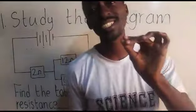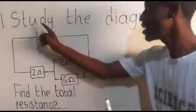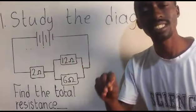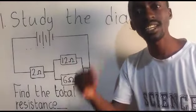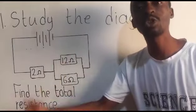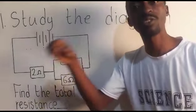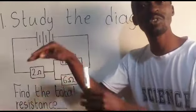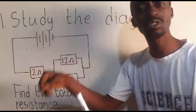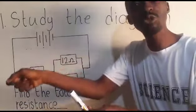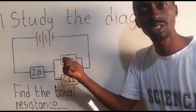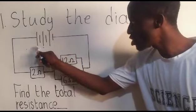We have a physics question that says study the diagram. This diagram here. Now this diagram is what we call a circuit. A circuit is a diagrammatical representation of the flow of electricity. What is electricity? It is the flow of electrons through a conductor. Why do electrons flow? Because of the induced energy or electromotive force in that circuit.